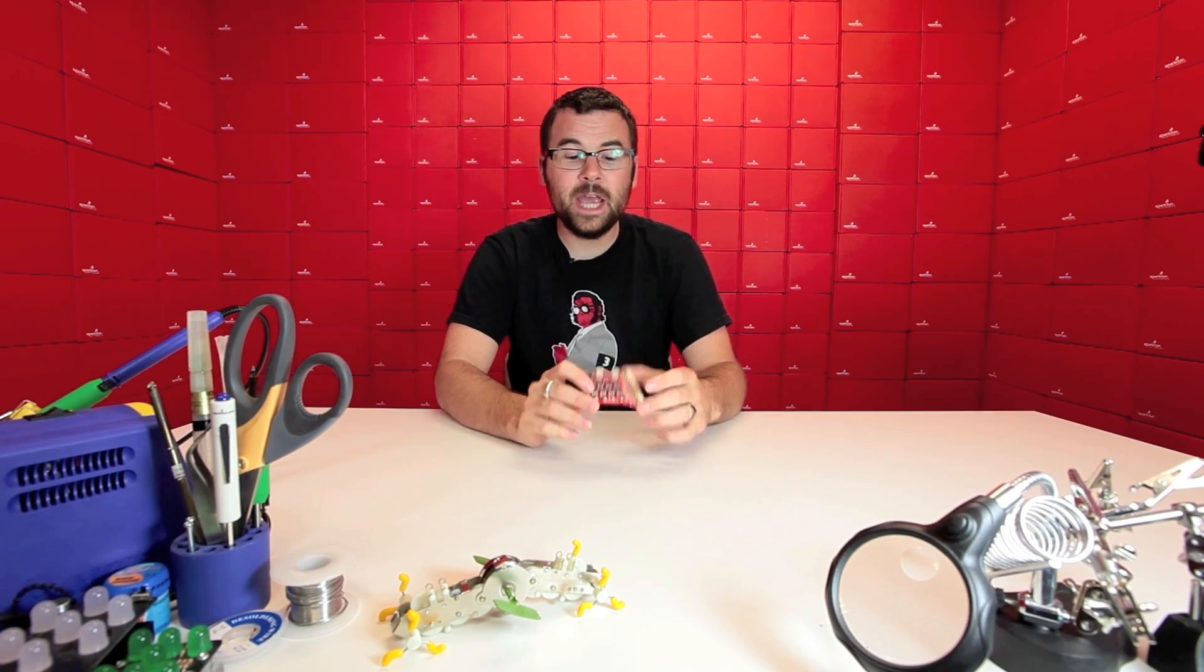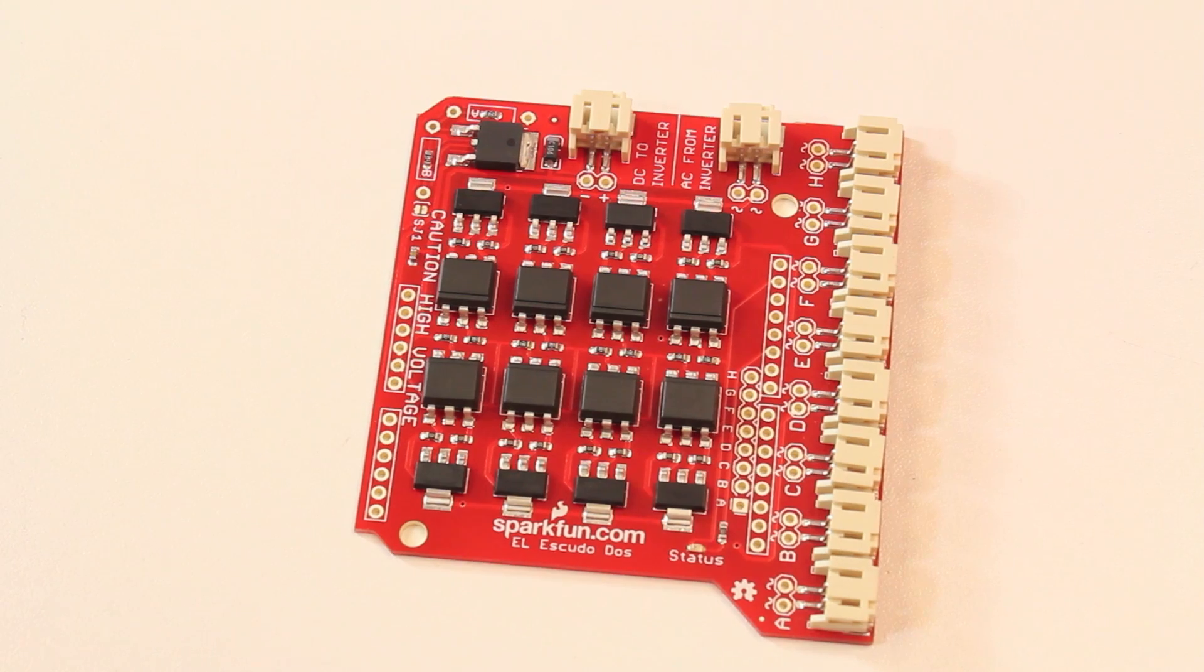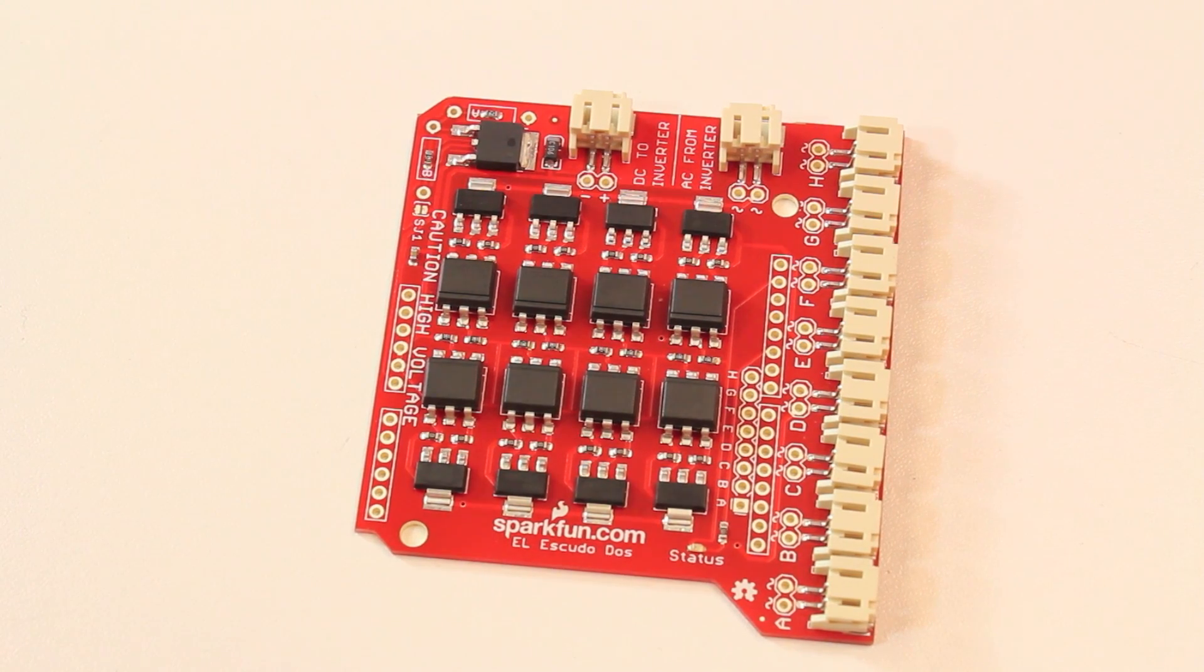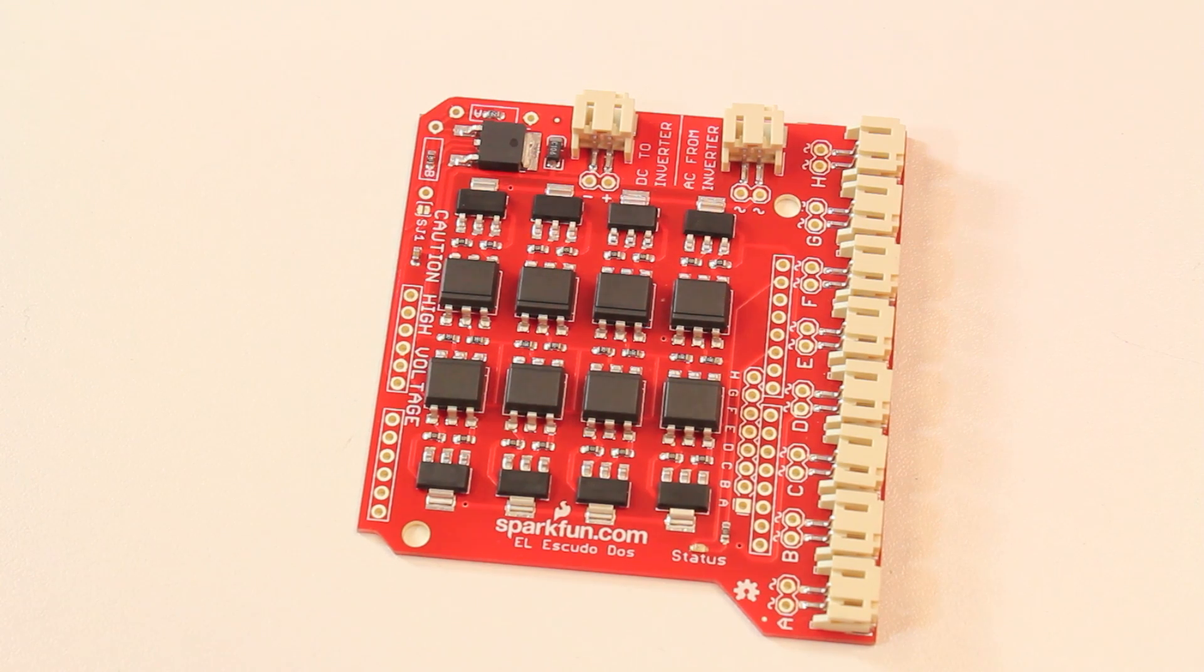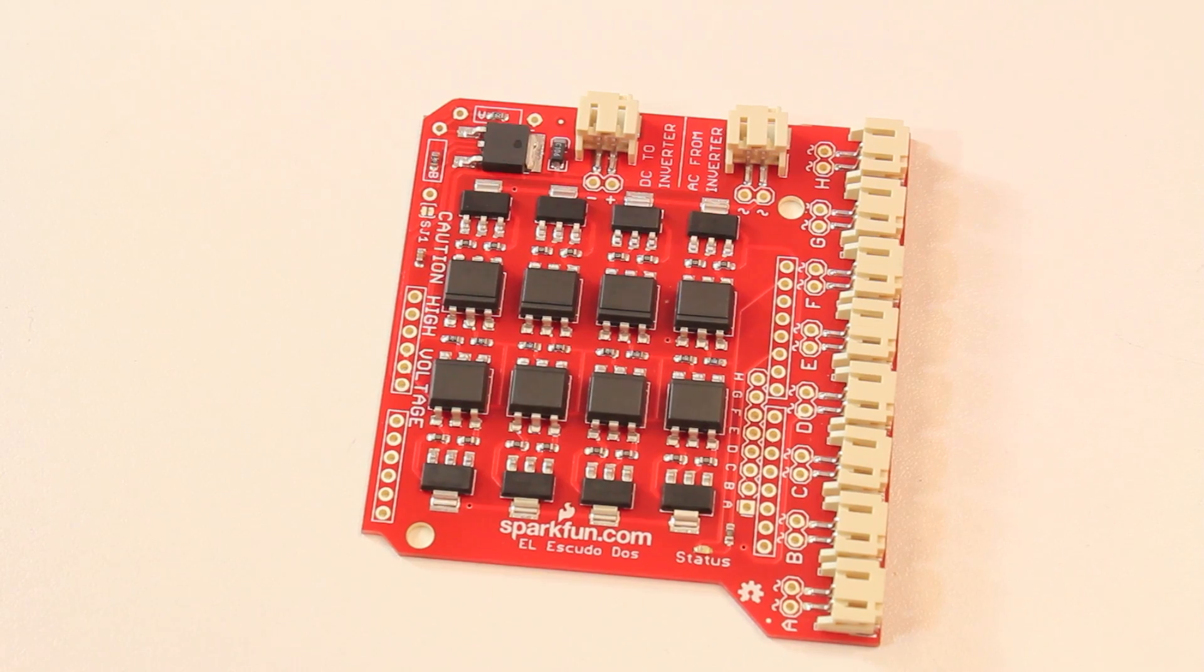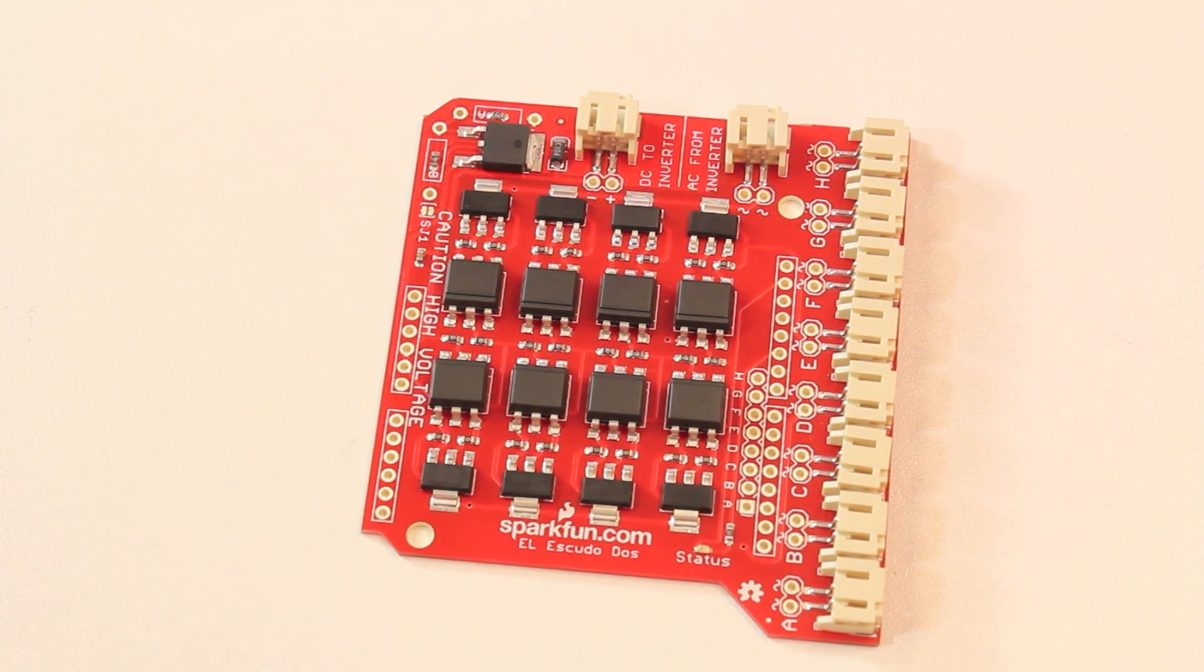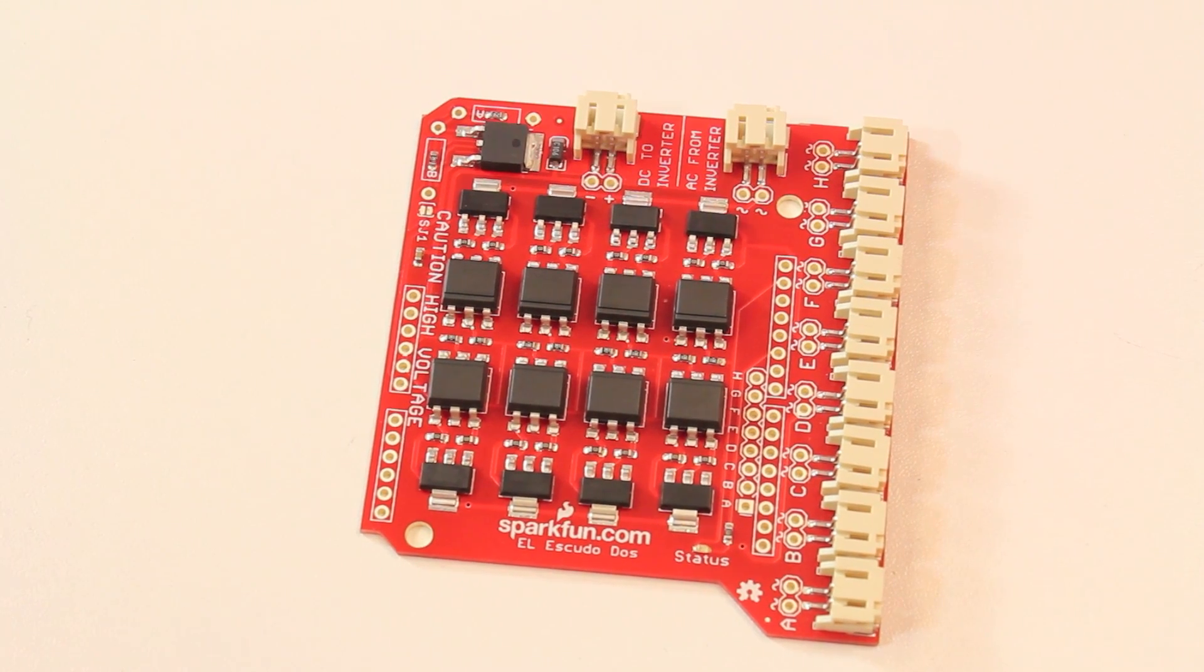A couple of the changes that we've made, which are pretty substantial, is all the triacs are now optically isolated. You shouldn't have any issue with them blowing anymore. In addition to that, we also have a variable voltage regulator going into, you would plug in your inverter here, and we have a variable voltage regulator going up to one and a half amps. There shouldn't be any more issue with supplying enough current into that inverter.